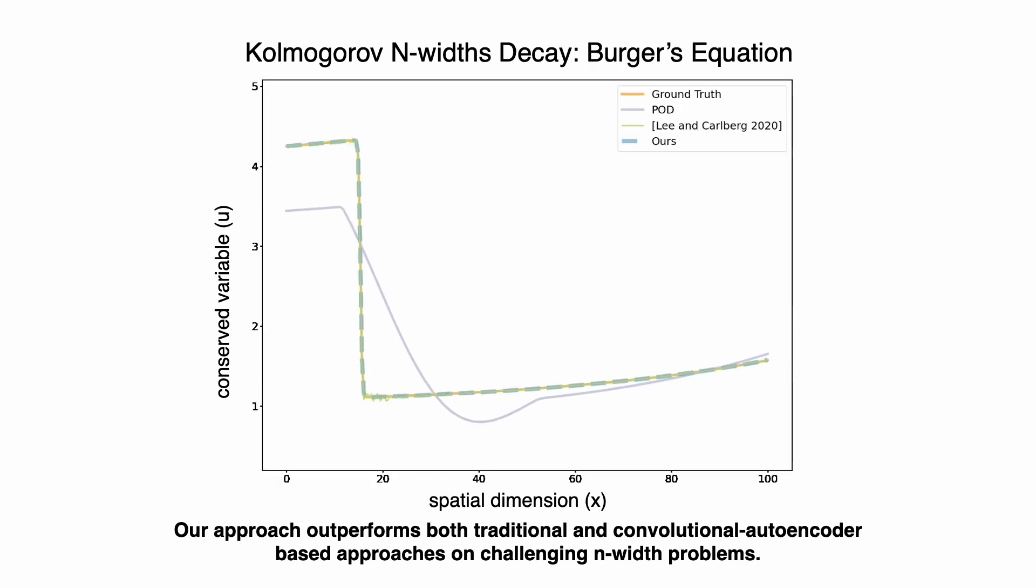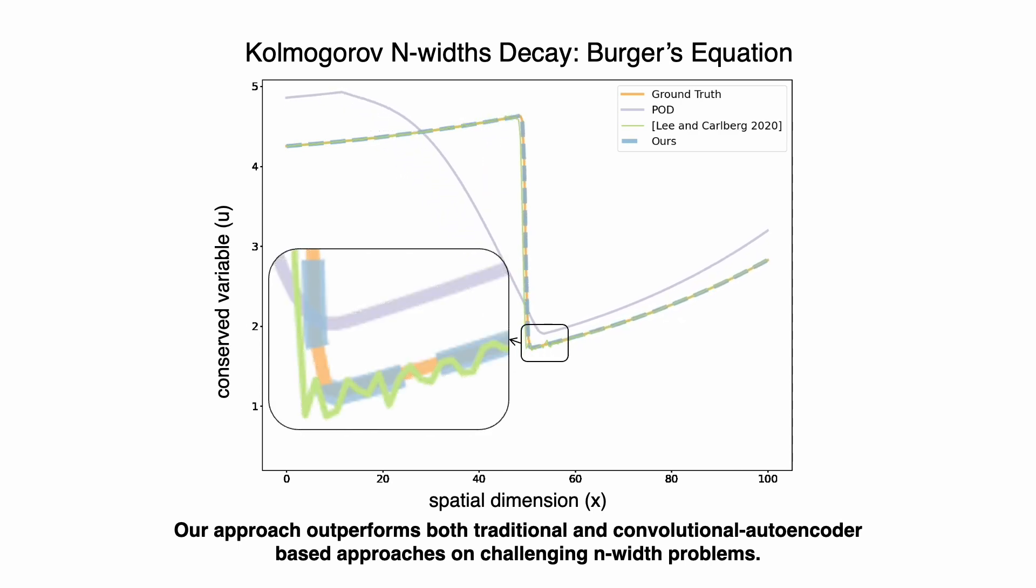Even when looking at Burger's equation, which models non-linear dynamics, we find CROM is more accurate and does not exhibit artifacts at points of non-linearity, providing better tracking than convolutional autoencoder and POD methods. Furthermore, due to our resolution-independent architecture, we achieve these results with 12 times less memory than convolutional autoencoder methods.